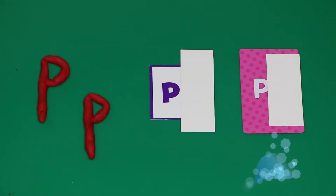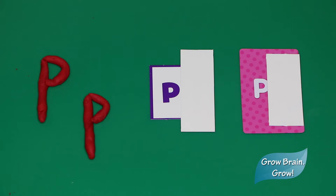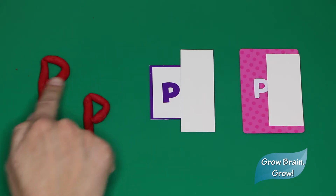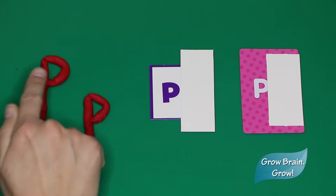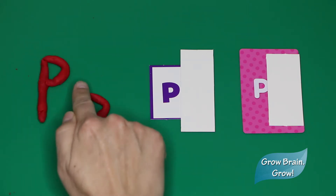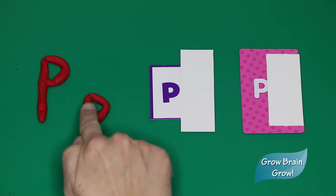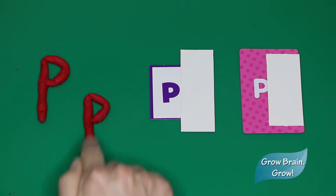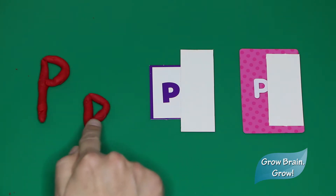Let's talk about how to recognize uppercase and lowercase P. They look very similar. Uppercase P is tall and he bumps around. Lowercase P goes down, down, down, and he bumps around.